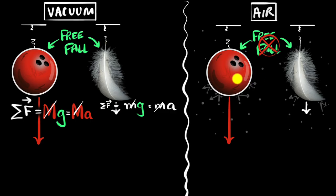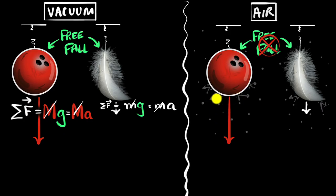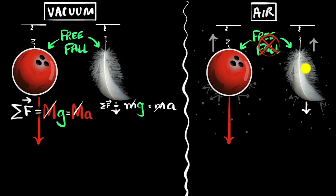We already know that the bowling ball falls faster compared to the feather. So which of the two has more air resistance? My intuition says because the feather falls slower, maybe there's more resistance on the feather. But let's check. Air resistance depends on surface area — more surface area means more molecules can hit — and it also depends on speed; if you're falling faster, you ram into air molecules more, so air resistance is more. Now the bowling ball has a larger surface area and is falling faster, which means the air resistance for the bowling ball is actually higher compared to the feather. My intuition was wrong.